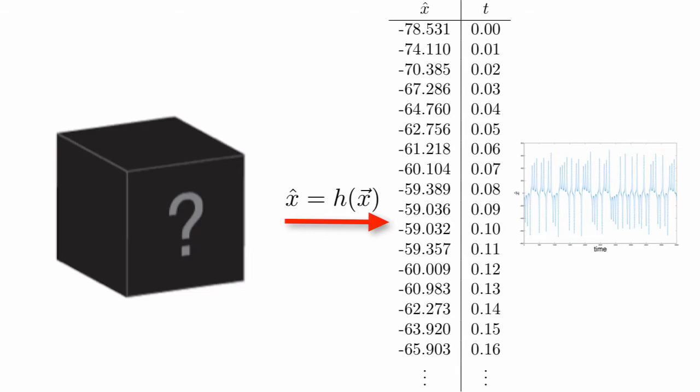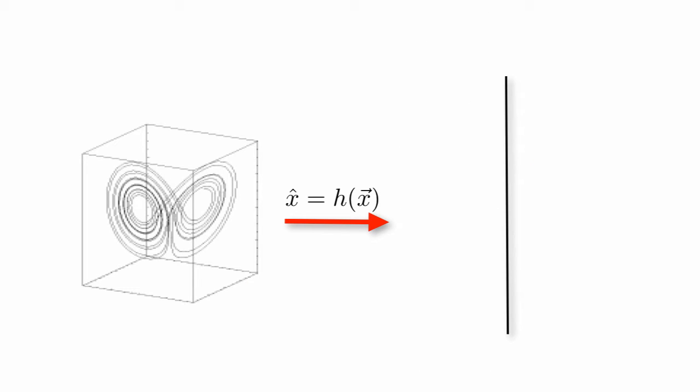In the previous segment, we started talking about time series data from dynamical systems. That is, scalar data. You've stuck a single sensor in your system and you've made a series of observations, evenly sampled in time, of some single variable. As you'll recall,